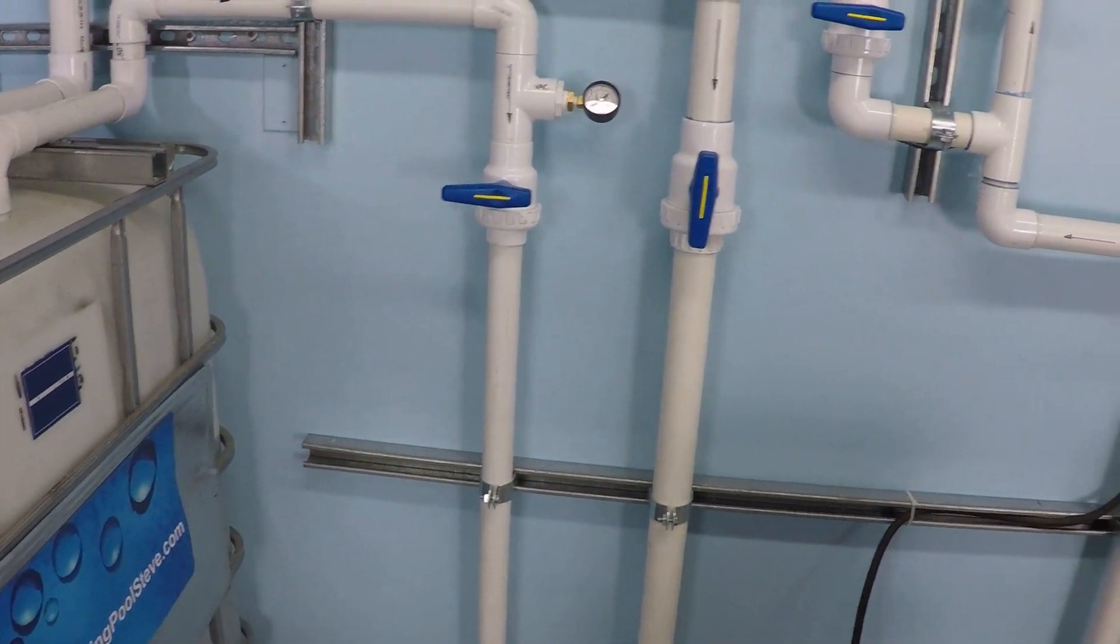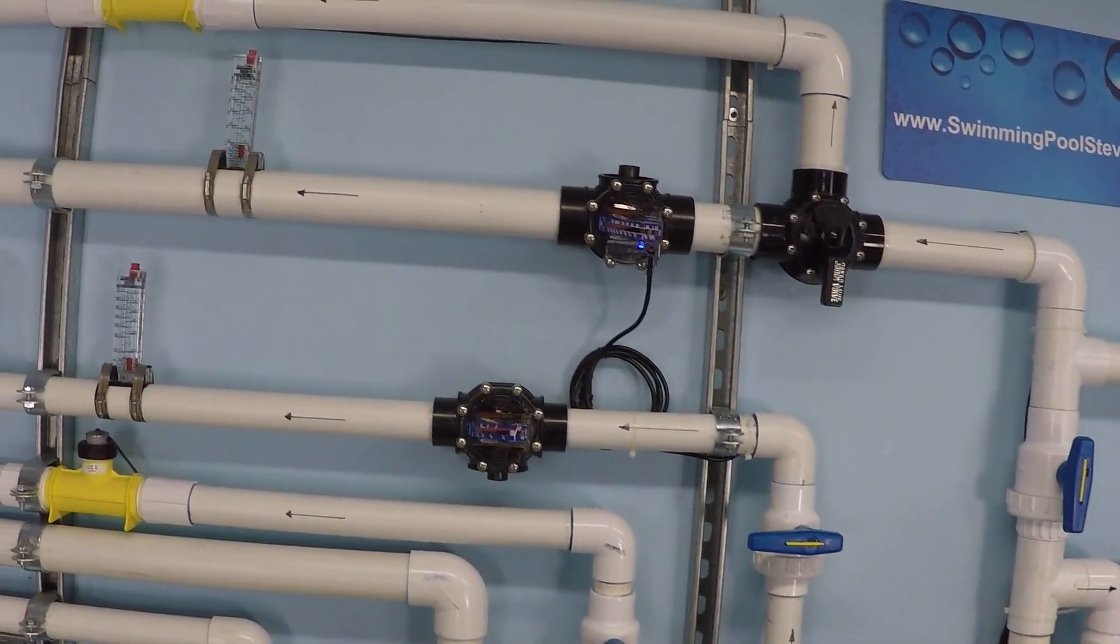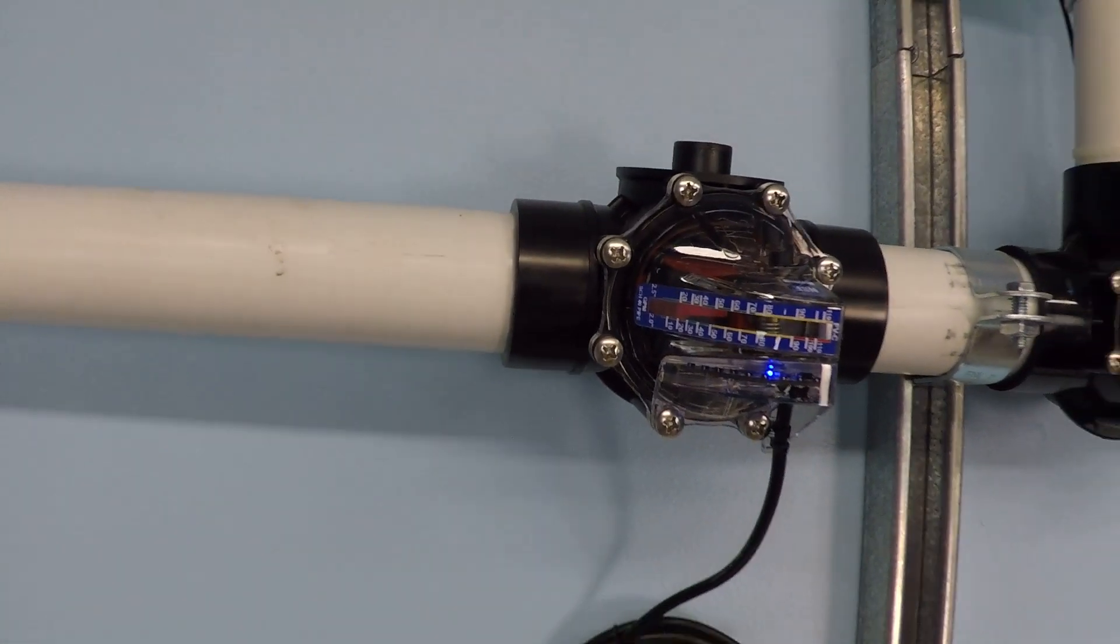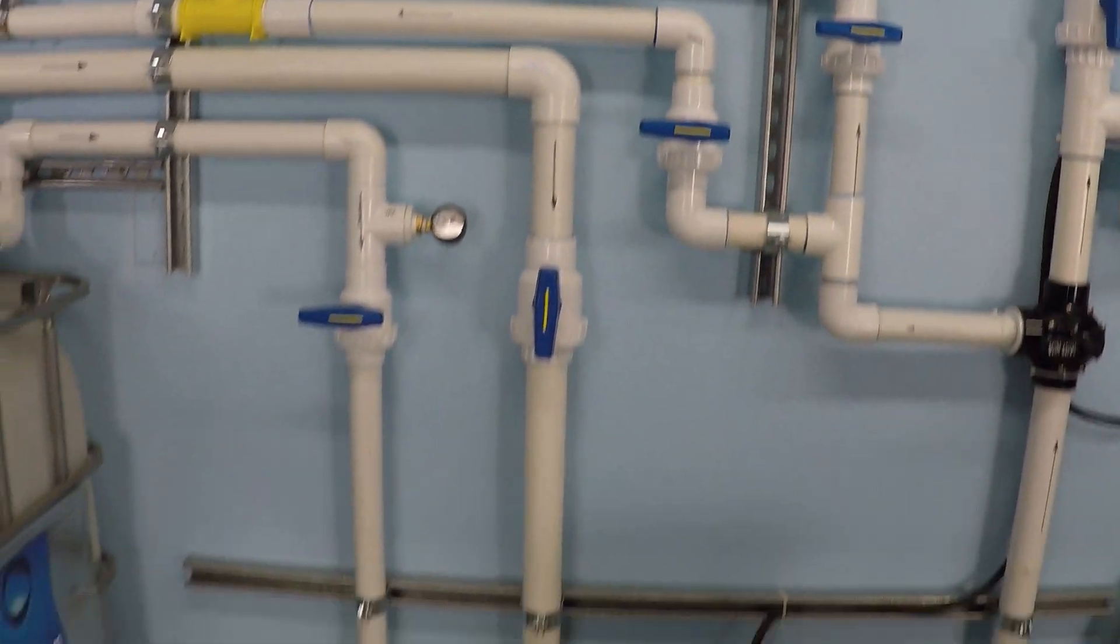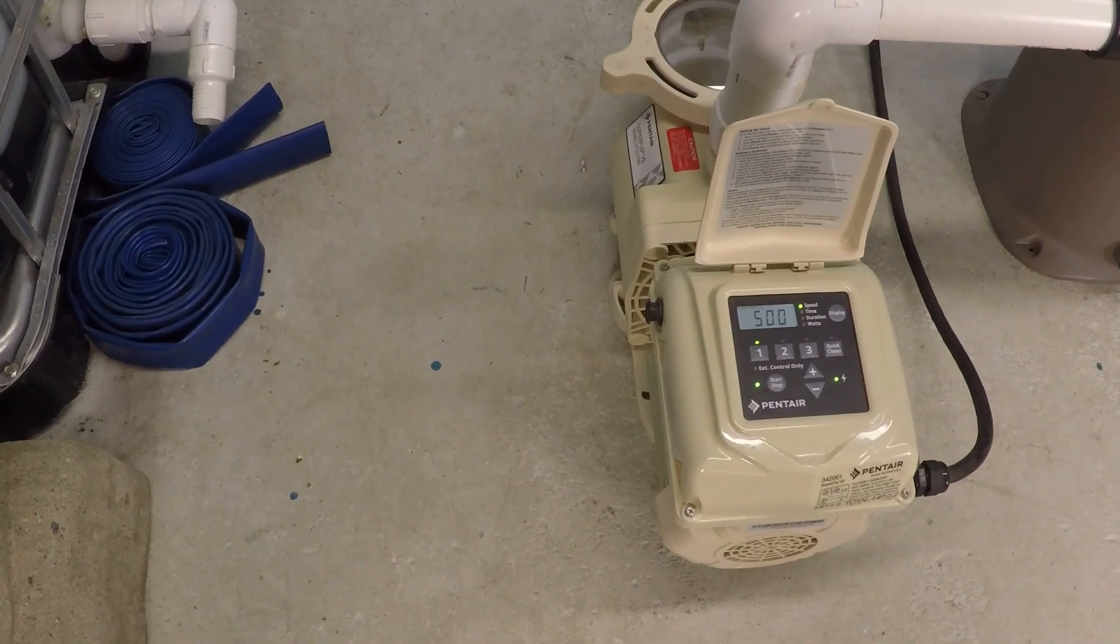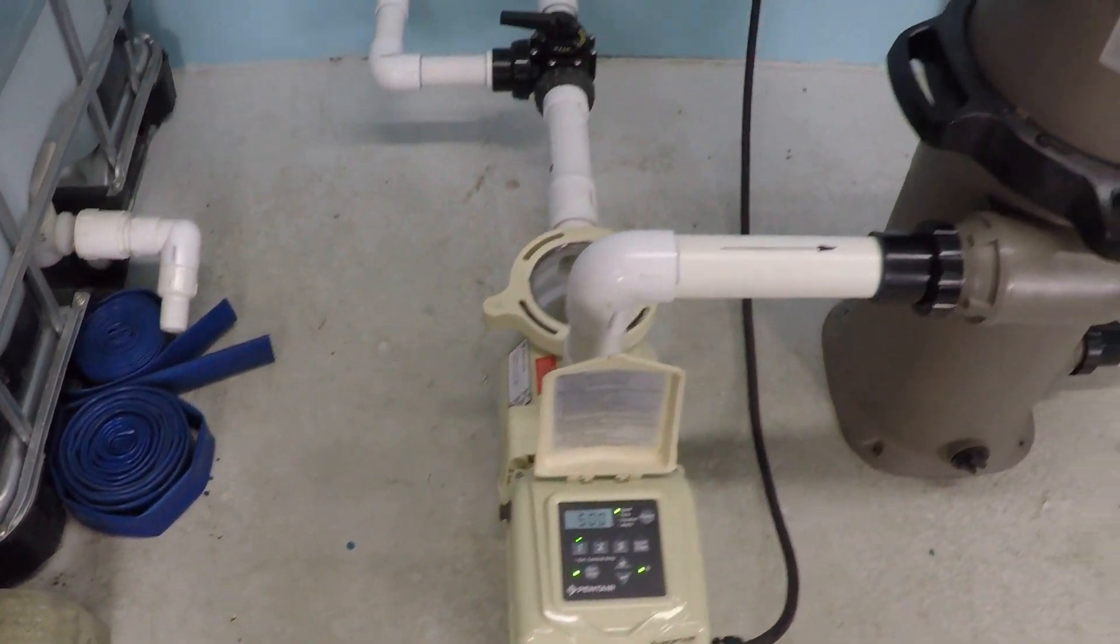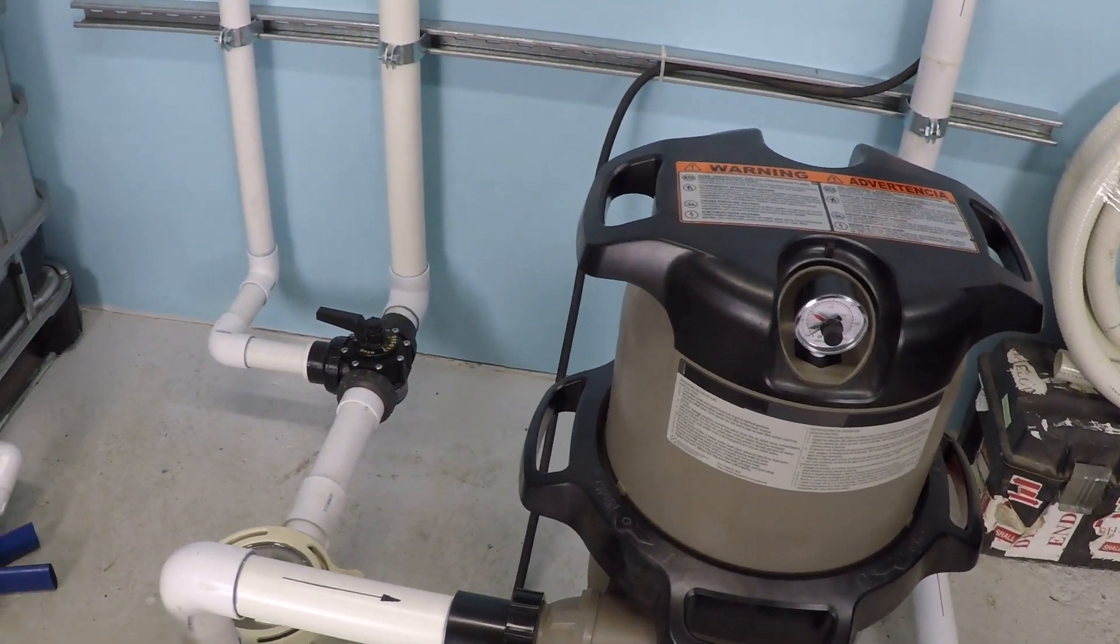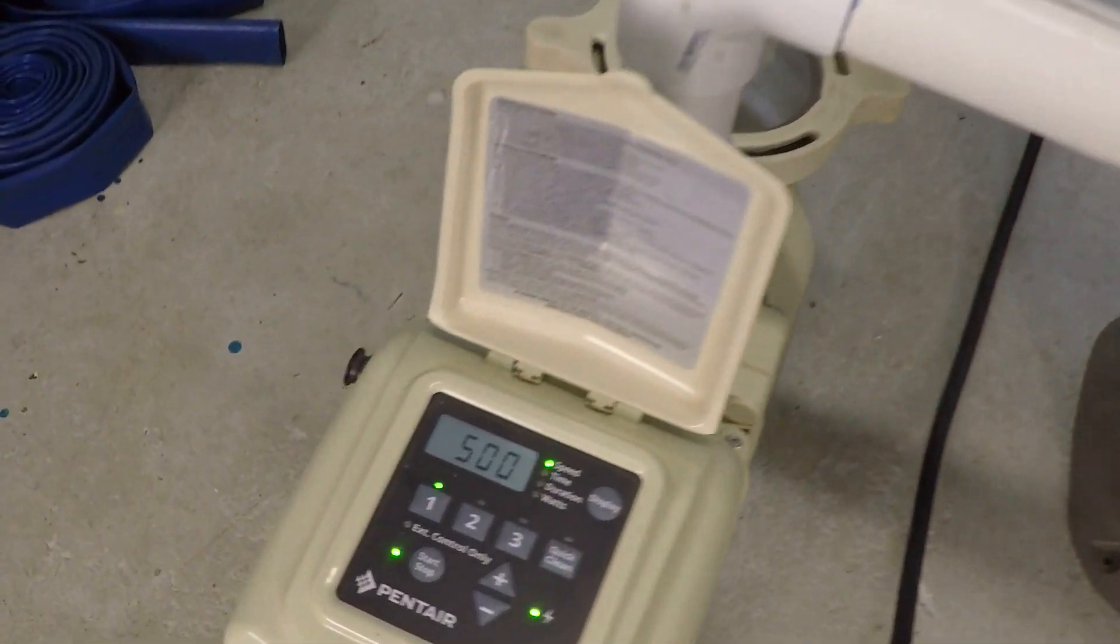So on this system I have a two-inch suction line in use here and a two-inch discharge line as well that we will be monitoring the flow through a digital flow meter. The pump is a one and a half horsepower Pentair SuperFlow variable speed pump. Filter is 150 square foot Hayward cartridge filter.